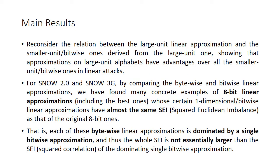In this paper, we reconsider the relation between the large unit linear approximation and the smaller unit and bitwise ones derived from the large unit, showing that approximations on large unit alphabets have advantages over all the smaller unit or bitwise ones in linear attacks. For SNOW 2 and SNOW 3G, we found many concrete examples of 8-bit linear approximations, including the best ones, whose certain one-dimensional or bitwise linear approximations have almost the same SEI as that of the original 8-bit ones.